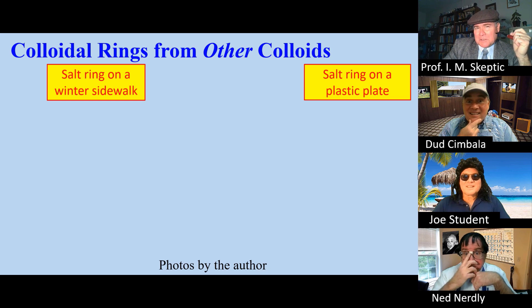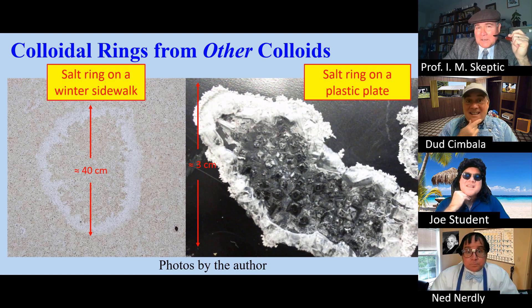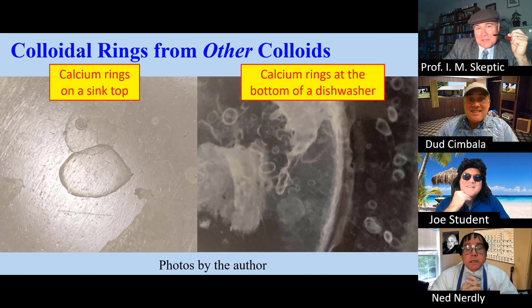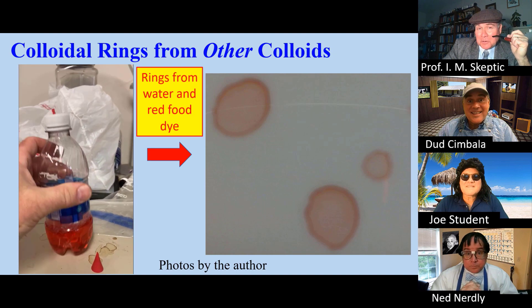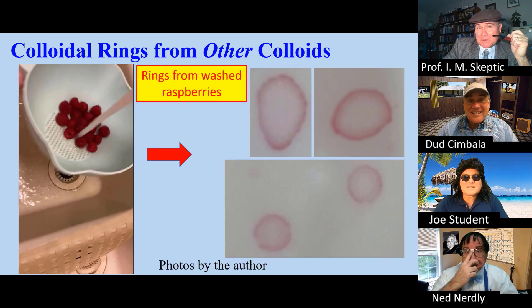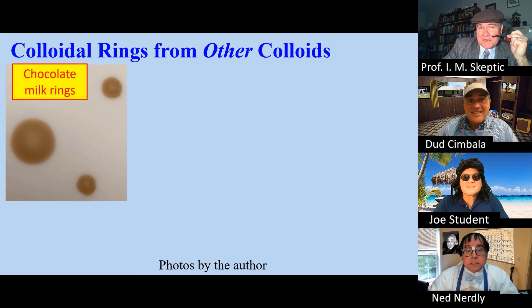You can get rings from other substances besides coffee — we'll call these colloidal rings. For example, salt water. These can be large, like on a sidewalk, or small on a dish. If you look closely, you can see calcium rings on sink tops and in the bottom of your dishwasher. Here I mixed up some red food dye — you can see the colloidal rings formed by the red food dye drops. A similar thing happens when you wash red raspberries. You can even get colloids from chocolate milk.